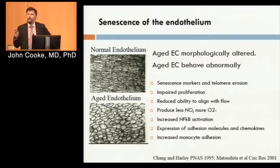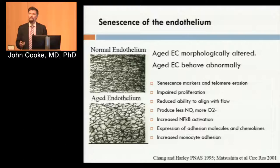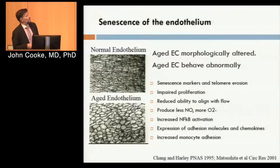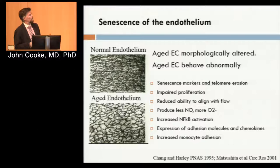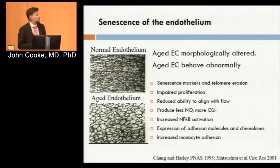Another thing that happens in atherosclerosis at these bends, branches, and bifurcations is what I call focal senescence. Chang and Hurley discovered back in 1995 that at these sites, endothelial cells are turning over faster and becoming senescent faster. Normally, endothelial cells are aligned with flow and make a lot of nitric oxide and prostacyclin. But when they age — particularly at bends, branches, and bifurcations — they assume more of a cobblestone morphology. These abnormal cells are not aligned with flow; they express adhesion molecules, chemokines, reactive oxygen species, and less nitric oxide. Monocytes tend to stick here.